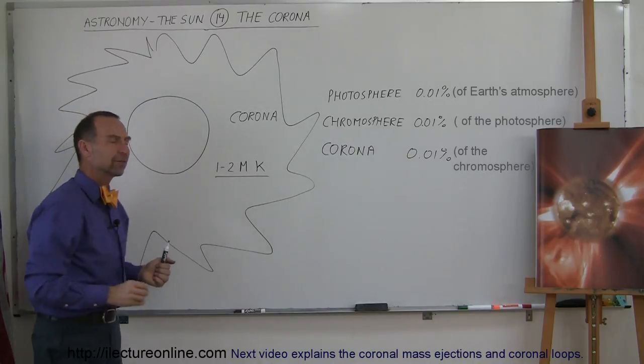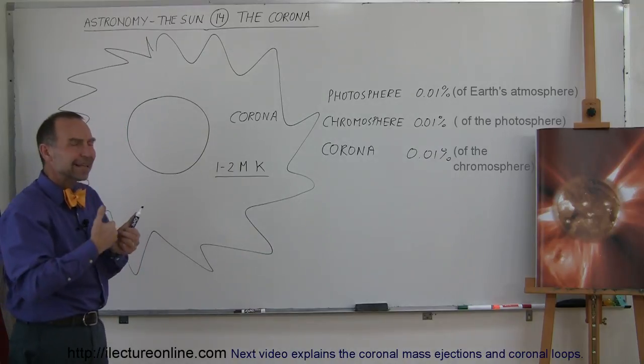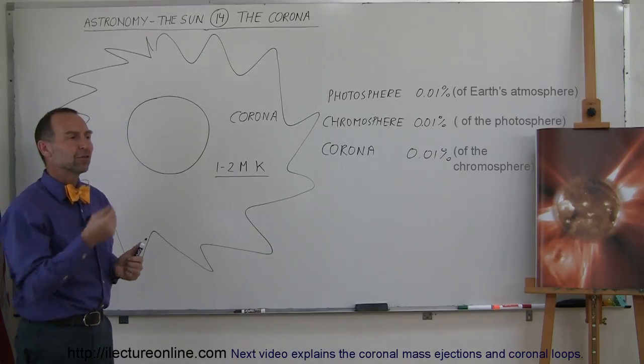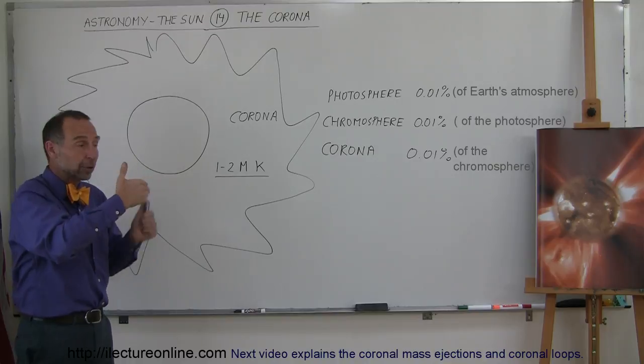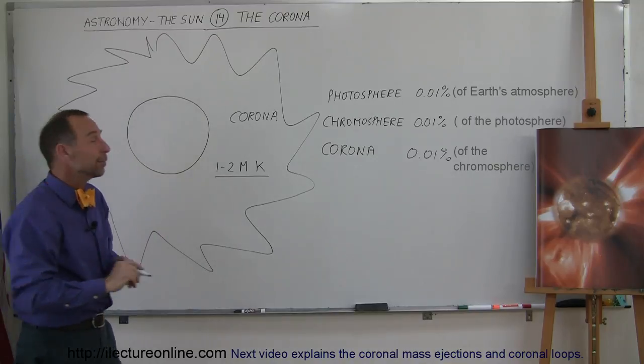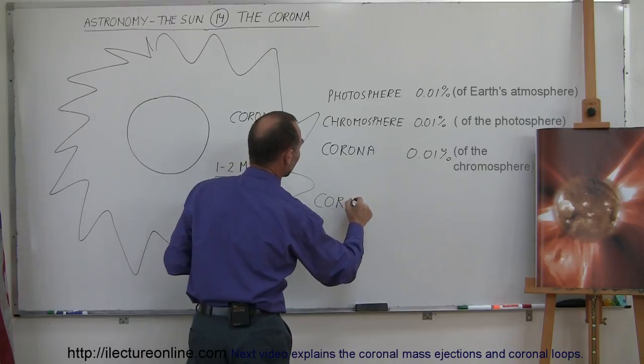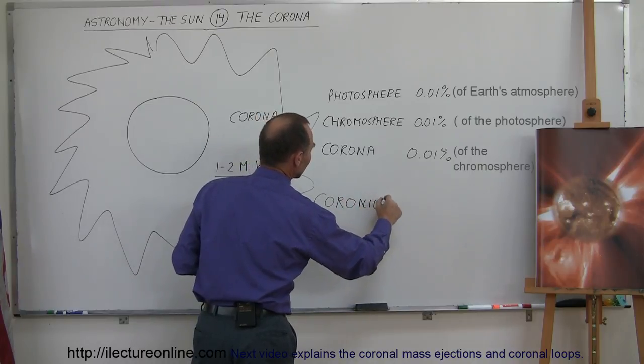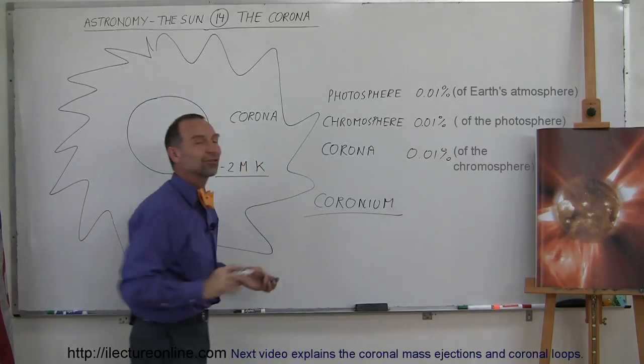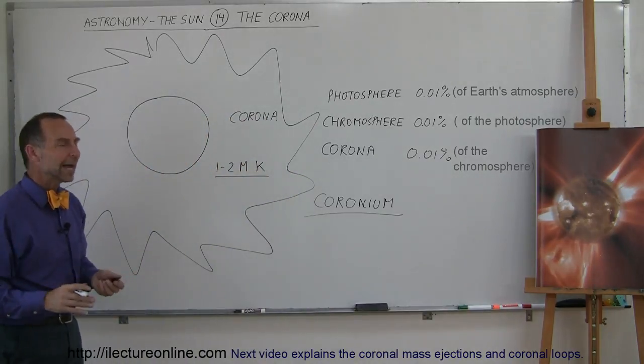When we saw the spectral lines from the corona, we could not identify what we're looking at. And so maybe there was an element in the corona that we didn't know, and we call that element coronium, named after the region around the sun, the corona. So coronium, which of course later on we find out there is no such thing as coronium.